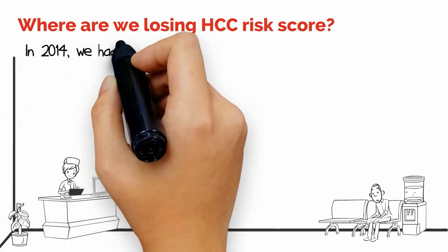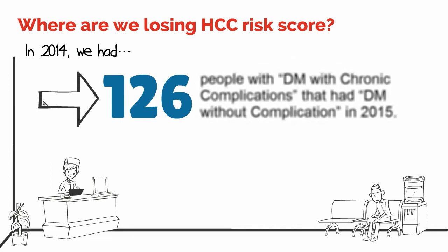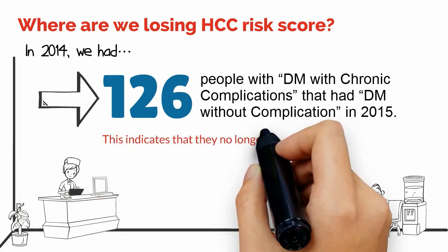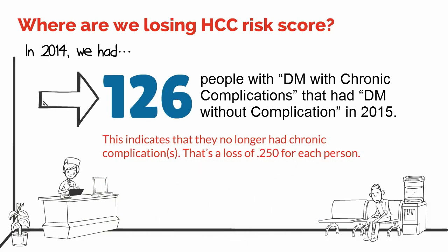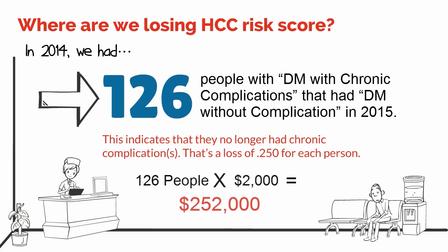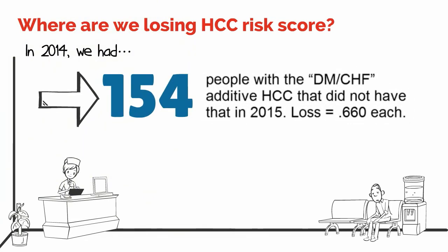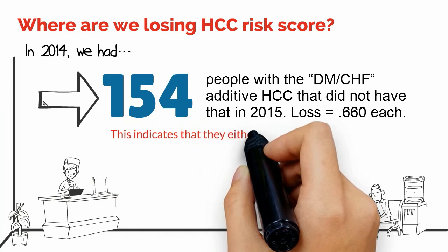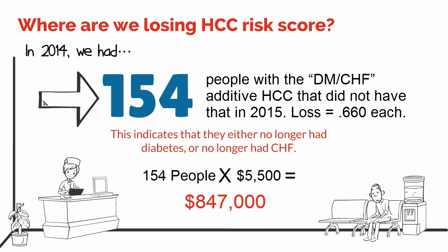So where are we losing our HCC risk scores? In 2014, we had 126 people with diabetes with chronic complications that in 2015 had diabetes without complications. That's a loss in risk score of 0.250 for each person, or over $2,000 in expected yearly cost. Also in 2014, we had 154 people that had the diabetes/CHF additive. In 2015 they did not, indicating they either no longer had diabetes or no longer had CHF — unlikely. That's a loss of 0.660 in risk score, or over $5,500 in estimated yearly cost.